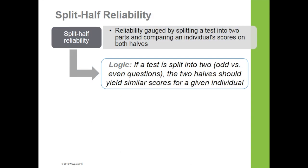Split half reliability is a lot like parallel forms, except it's a lazy man's version. Instead of creating new forms to gauge reliability, we take a single test and split it into two parts, comparing an individual's scores on both halves. The logic is that if a test is split into two — say odd versus even questions — the two halves should yield similar scores for a given individual or group.